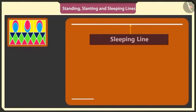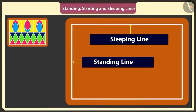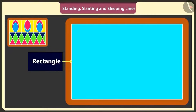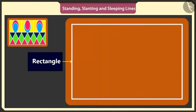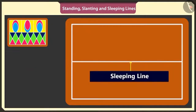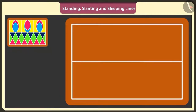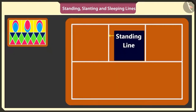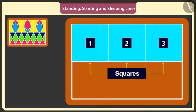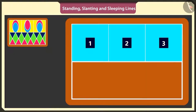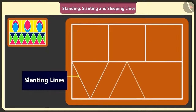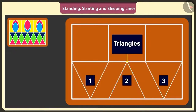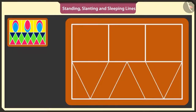First of all, I will make a big rectangle with two sleeping lines and two standing lines, like this. In the middle of the rectangle, I will draw a sleeping line, like this. Yes, now we have two rectangles. Draw two standing lines in the above rectangle and make three such small squares. Now under these three squares, I will draw three triangles, just like this.